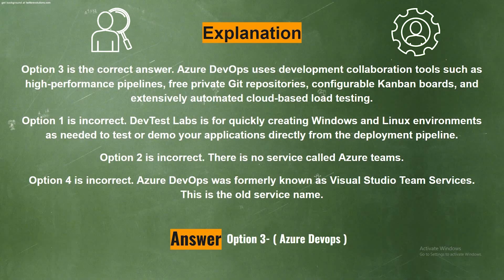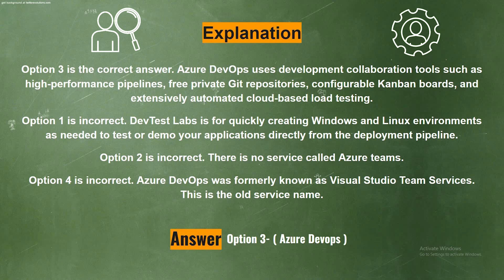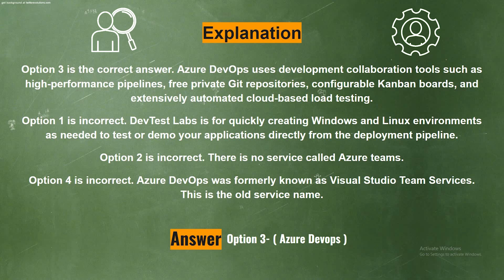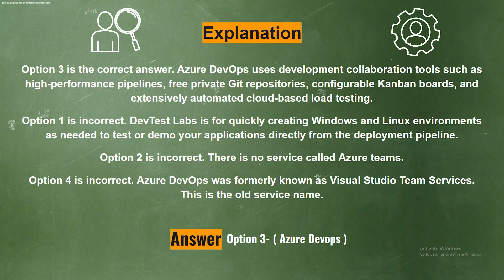Explanation. Option 3 is the correct answer. Azure DevOps uses development collaboration tools such as high-performance pipelines, free private Git repositories, configurable Kanban boards, and extensively automated cloud-based load testing. Option 1 is incorrect — DevTest Labs is for quickly creating Windows and Linux environments to test or demo applications directly from the deployment pipeline. Option 2 is incorrect — there is no service called Azure Teams. Option 4 is incorrect — Azure DevOps was formerly known as Visual Studio Team Services; this is the old service name.